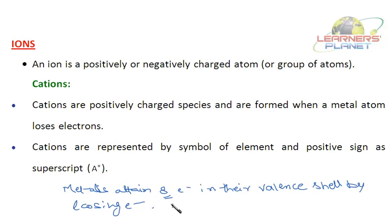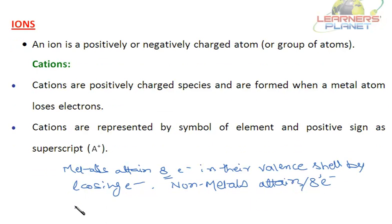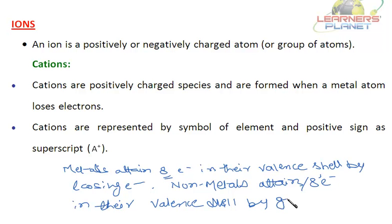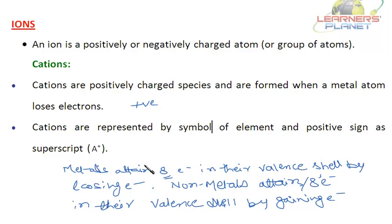Non-metals attain or complete their octet — that is, attain 8 electrons in their valence shell — by gaining electrons. This is the basic difference between metals and non-metals. Metals are electropositive: they lose electrons and form positive ions, whereas non-metals gain electrons and form negative ions. Cations are represented by the symbol of the element with a positive sign as superscript.